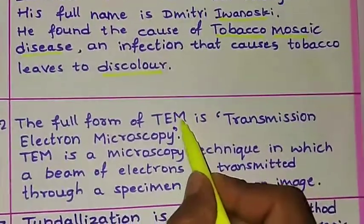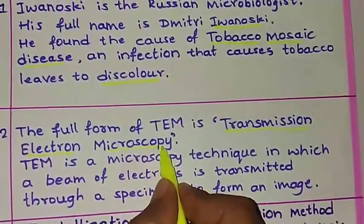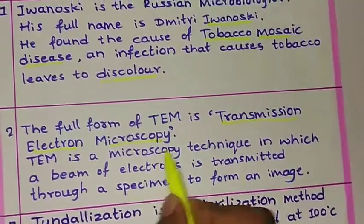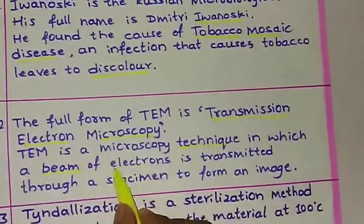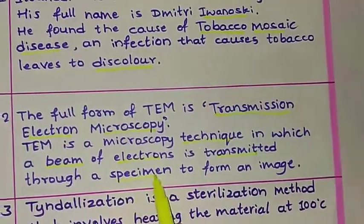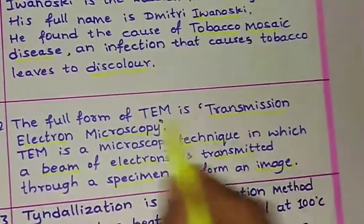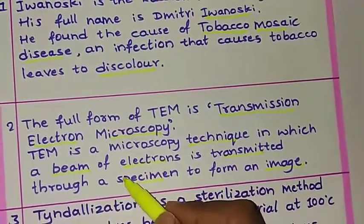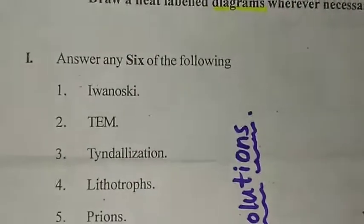The second question is TEM. The full form of TEM is Transmission Electron Microscopy. Transmission Electron Microscopy is a microscopy technique in which a beam of electrons is transmitted through a specimen to form an image. This may be asked for four marks or two marks, so please remember it.